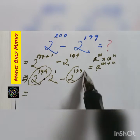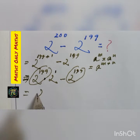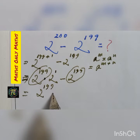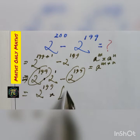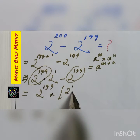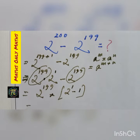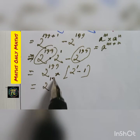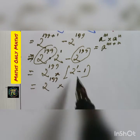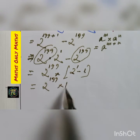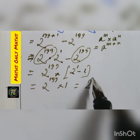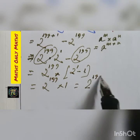Now 2 to the power 199 is common, so I factor it out: 2 to the power 199 multiplied by (2 to the power 1 minus 1). That gives 2 to the power 199 multiplied by (2 minus 1), which equals 1. The answer is 2 to the power 199.